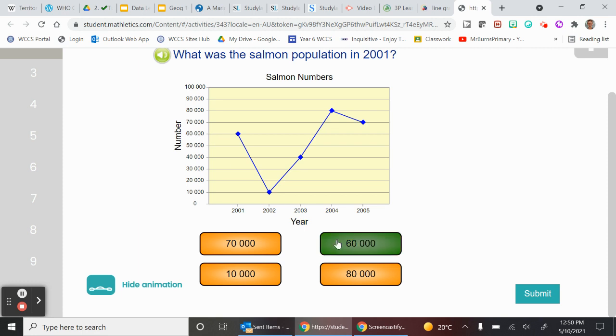The number we're looking at, go across the number information, is 60,000. So let's click on 60,000. Let's do one more. What was the range?